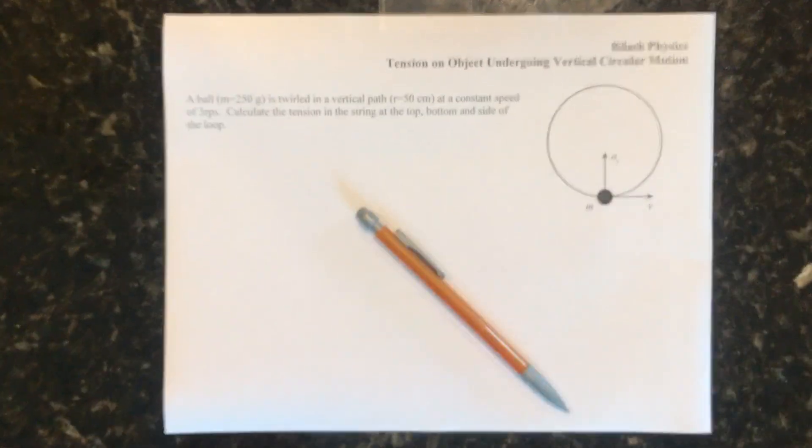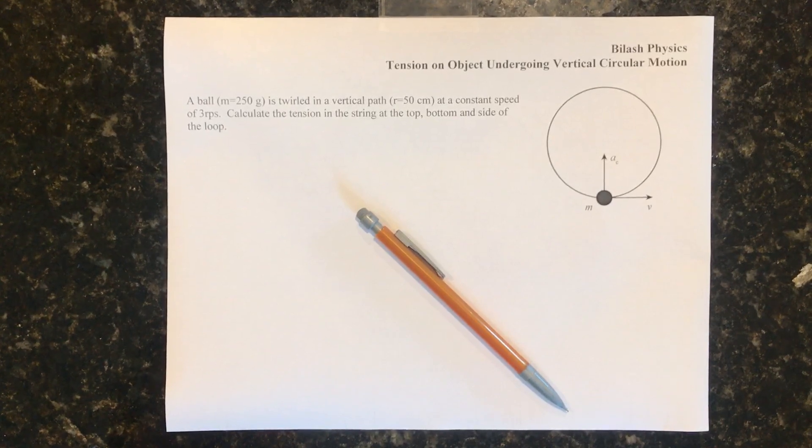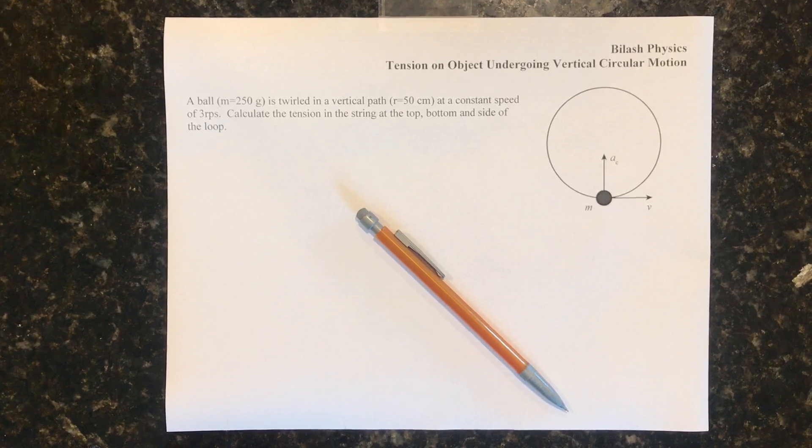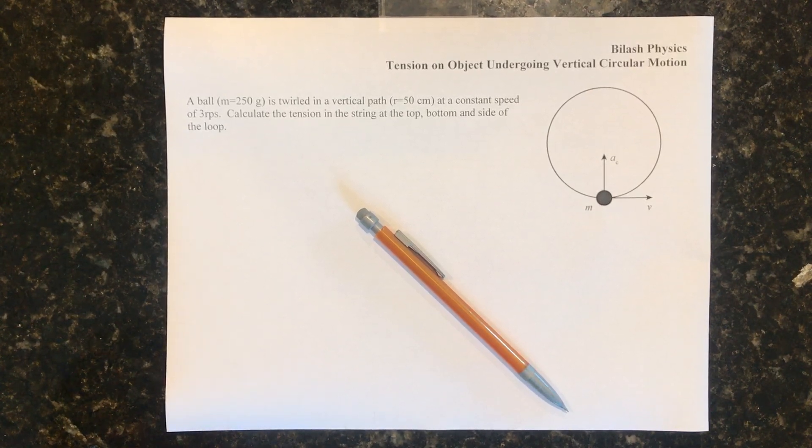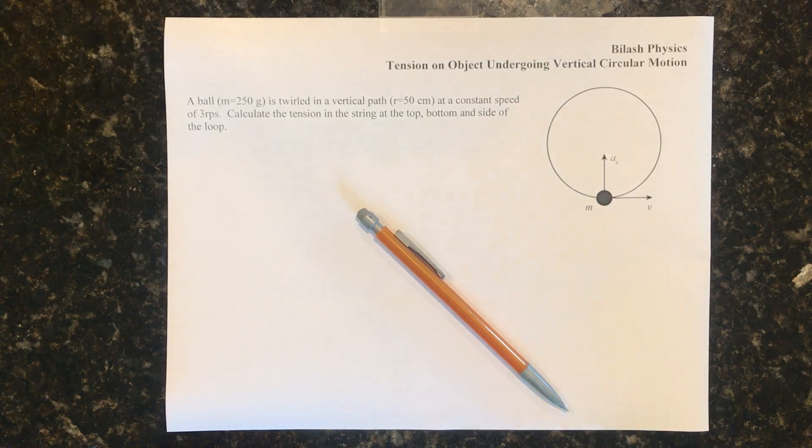A ball with a mass of 250 grams is twirled in a vertical path of radius 50 centimeters at a constant speed of 3 revolutions per second. Calculate the tension in the string at the top, bottom, and side of the loop.